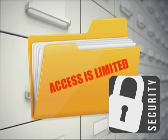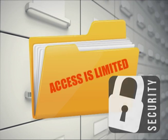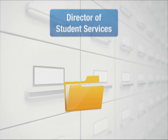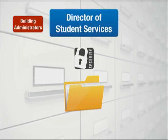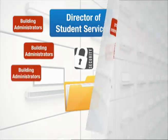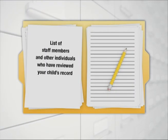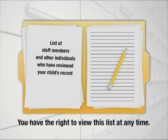Access to special education records is limited. The director of student services is responsible for the confidentiality of records with assistance from the building administrators. A list of staff members and other individuals who have reviewed your child's record is kept in the front of your child's educational file. You have the right to view this list at any time.